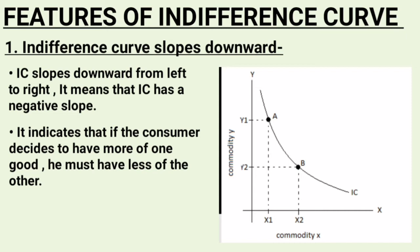This involves a combination of two commodities, X and Y, for the consumer. This indicates that if the consumer decides to have more of one good, they must have less of the other. If the consumer gives more preference to one good, the value of another good will reduce in their behavior.